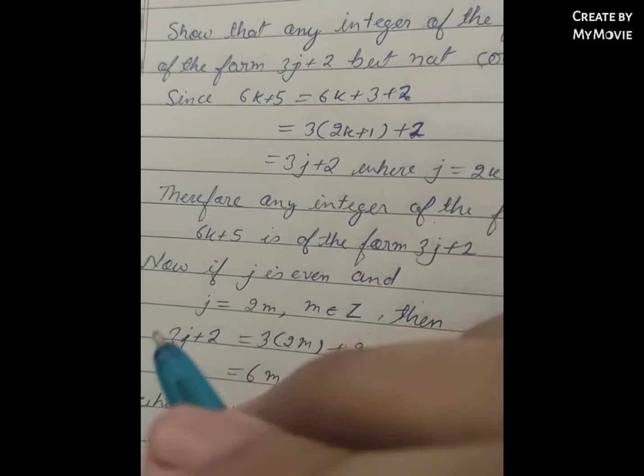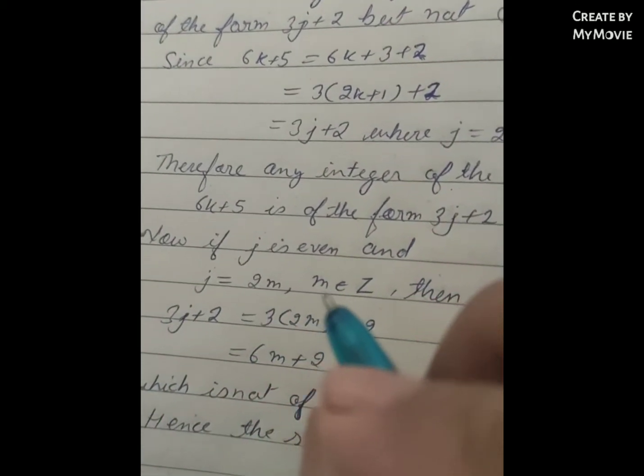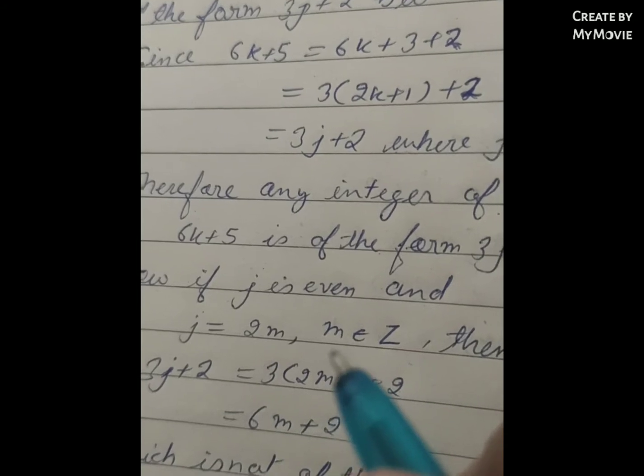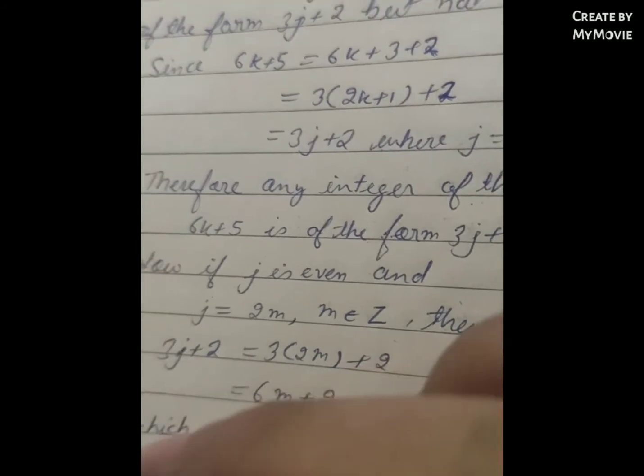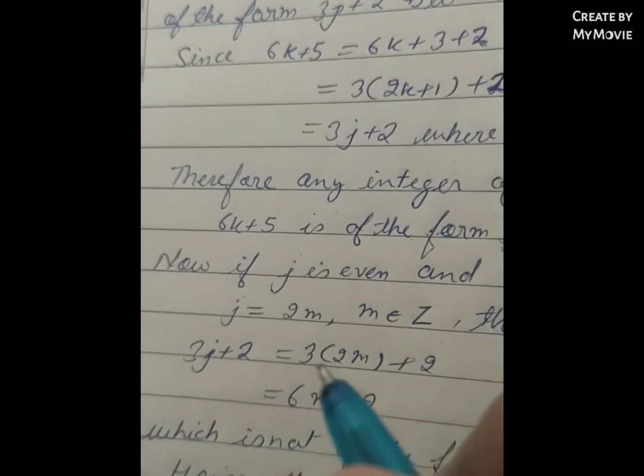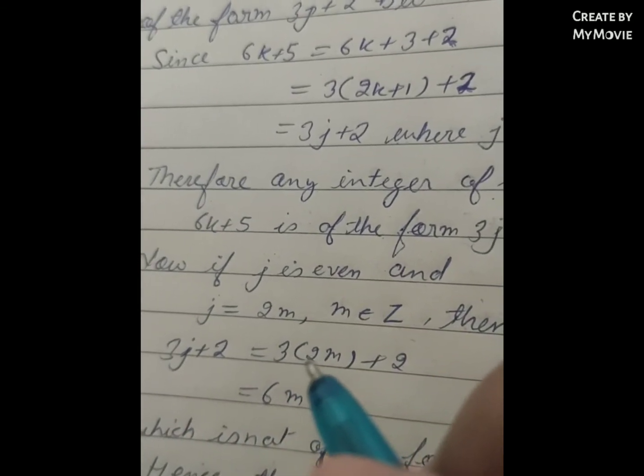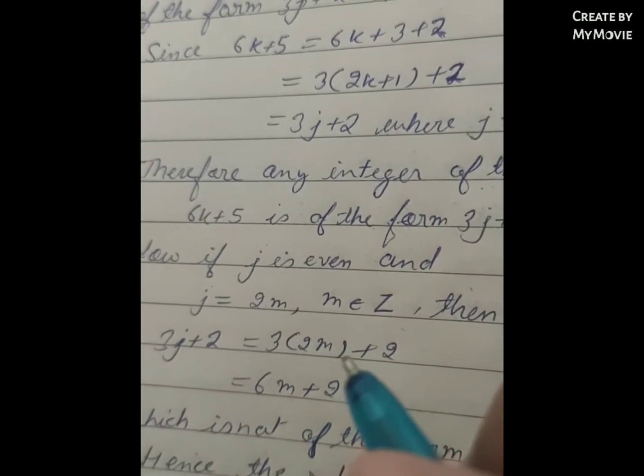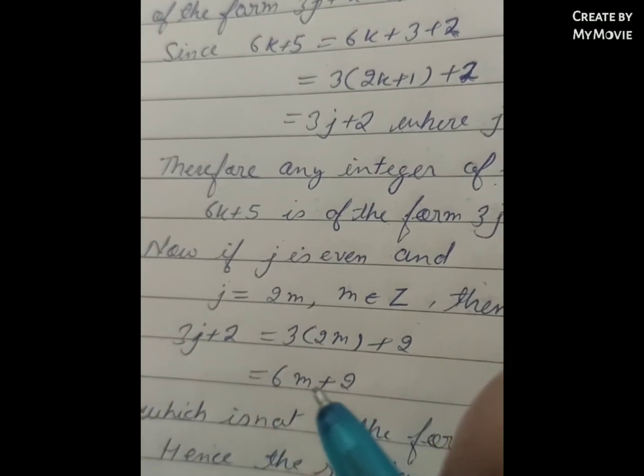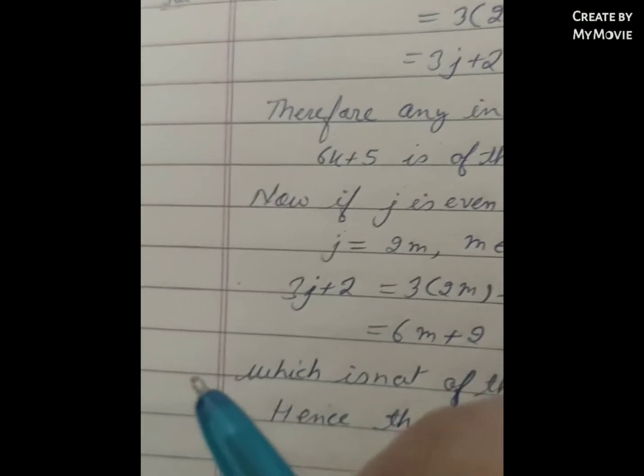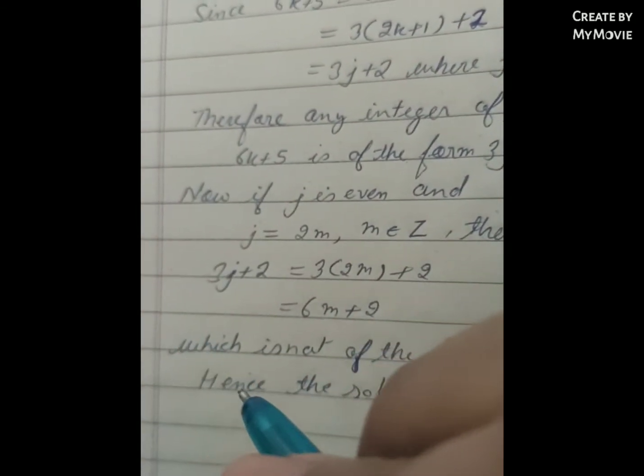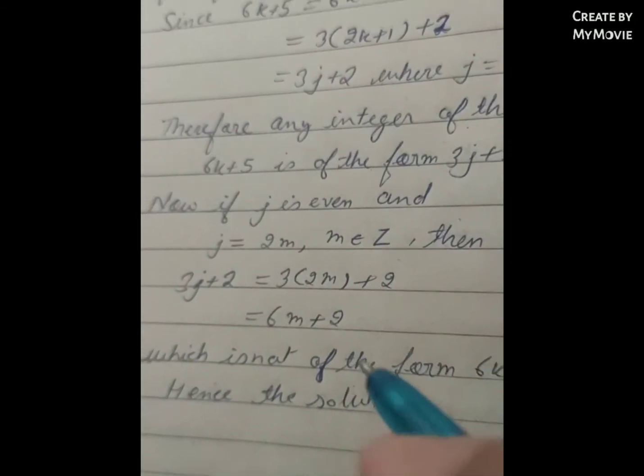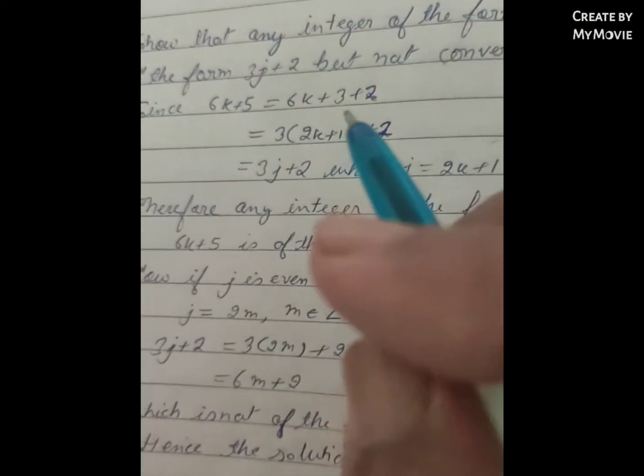Now if j is even, then j is equal to 2m, and so j equals 2m where m belongs to capital Z. Then 3j plus 2 is equal to 3 bracket 2m bracket close plus 2, that is equal to 6m plus 2, which is not of the form 6k plus 5.